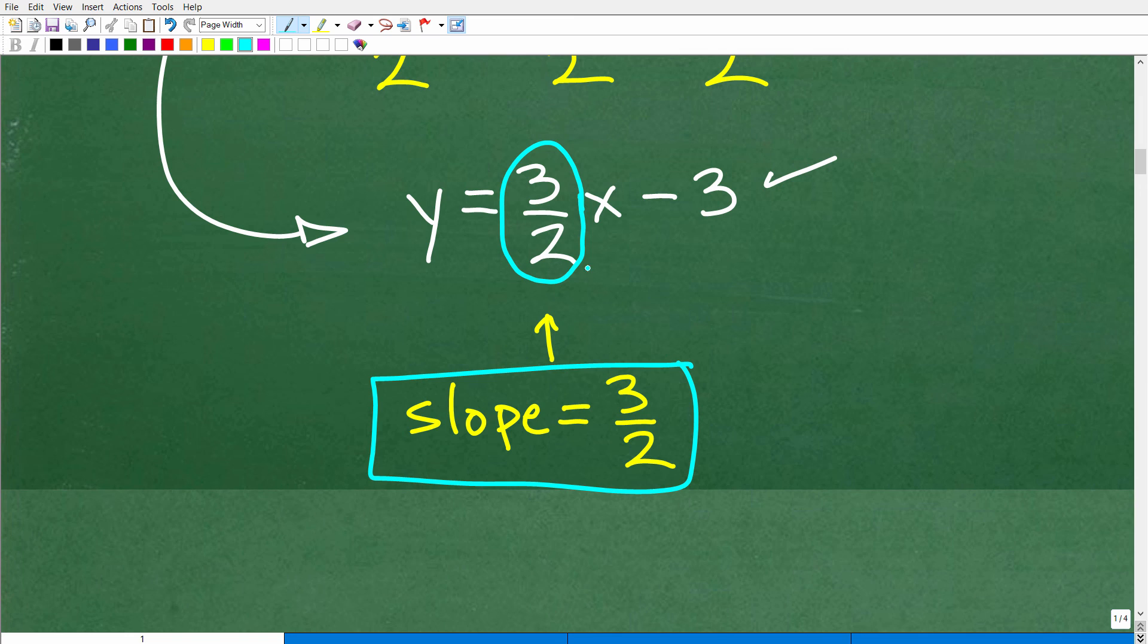So this is super easy. I'm like, hey, what's the slope of this line? Well, it's this value right here because this line or this linear equation is in slope-intercept form or y equals mx plus b form.